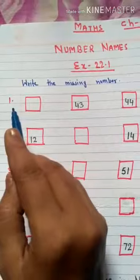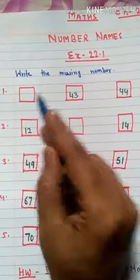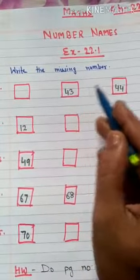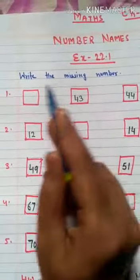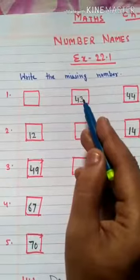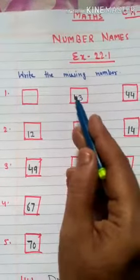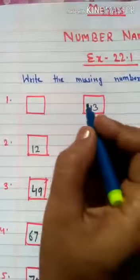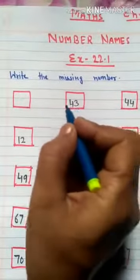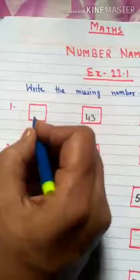So question number 1. Here we have to write the missing number, and 43 and 44 are given. So what will we put here? We will put the before number, because the number which comes on the left is the before number. So which number comes here?